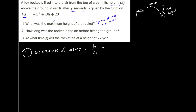So in this example, my b is positive 10, so I have the opposite of 10 over 2 times a, which in this case is negative 5. So I get negative 10 over negative 10, which is equal to positive 1. Now remember that x represents time — one second in this case. T is in the place of x, so when I find the x-coordinate of the vertex, I am finding the time t that it takes to reach that vertex — it takes one second to reach it.